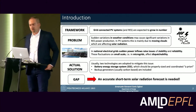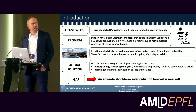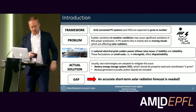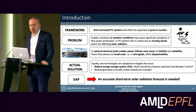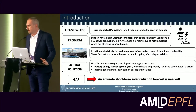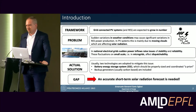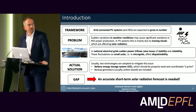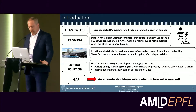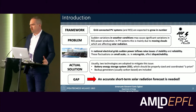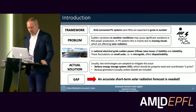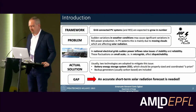The framework of this research is related to the expected growing number of photovoltaic power plants and renewable energy sources in general. Sudden variation in weather conditions strongly affects power production from renewable energy sources, and more specifically for photovoltaic systems, this is related to cloud movement affecting solar radiation. In national electrical grids, sudden power inflows raise issues of stability and reliability, and on a smaller scale with microgrids, they affect dispatchability and management.